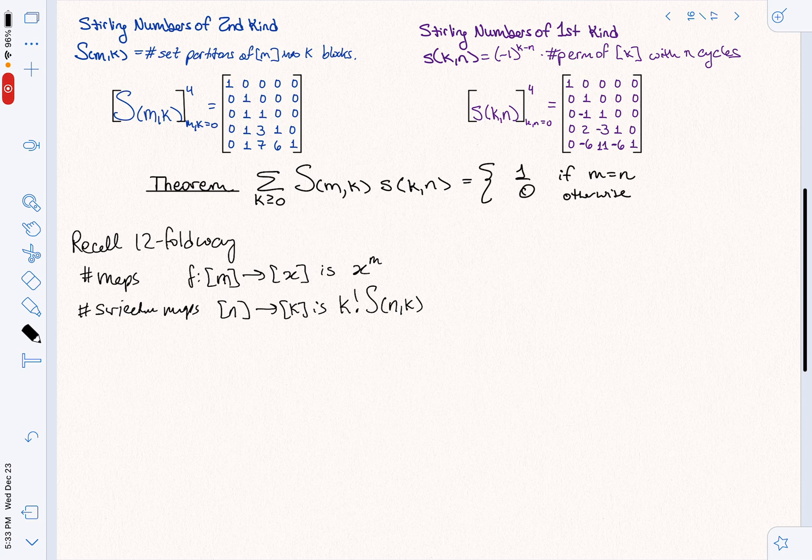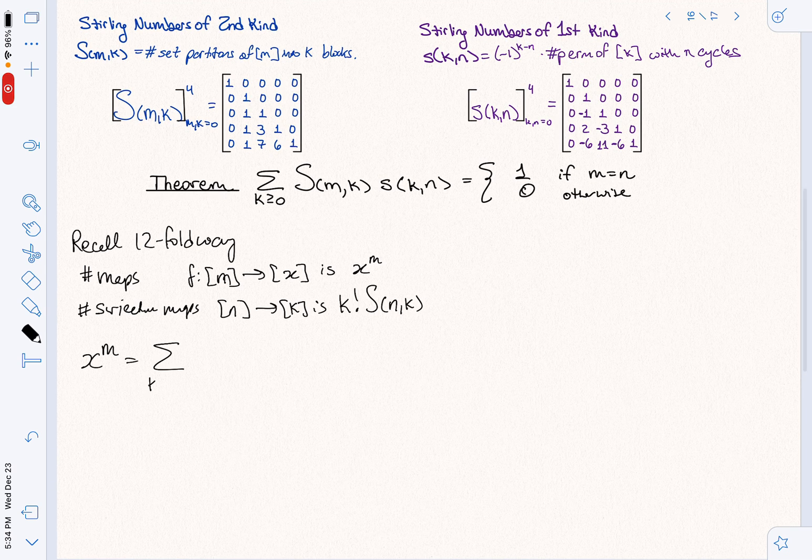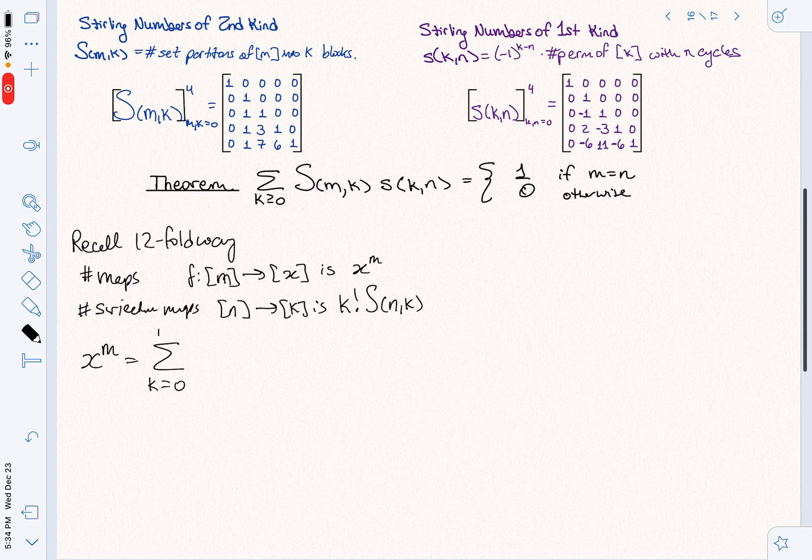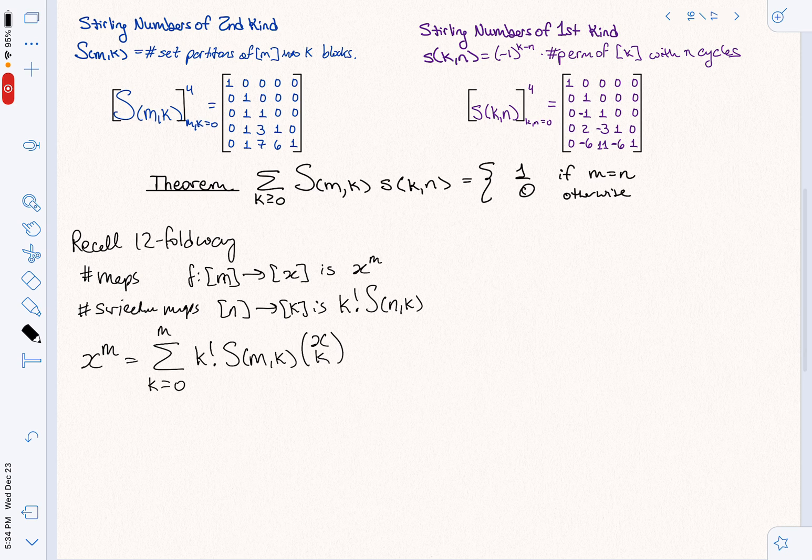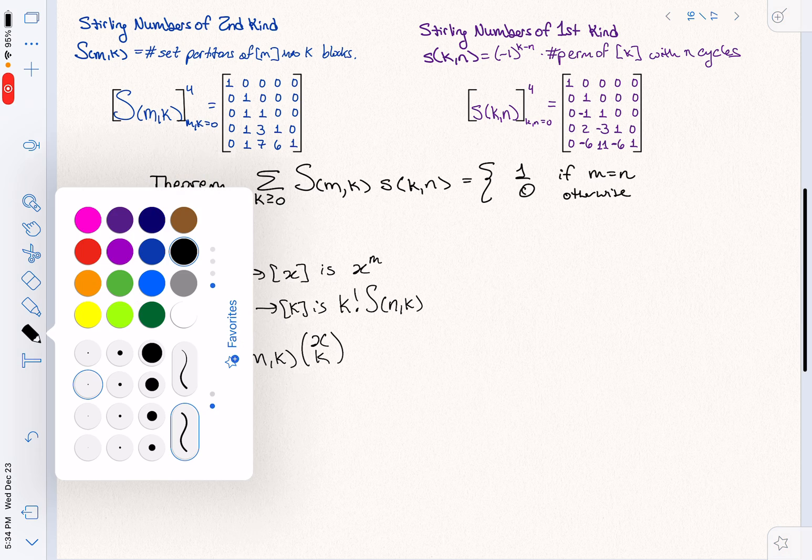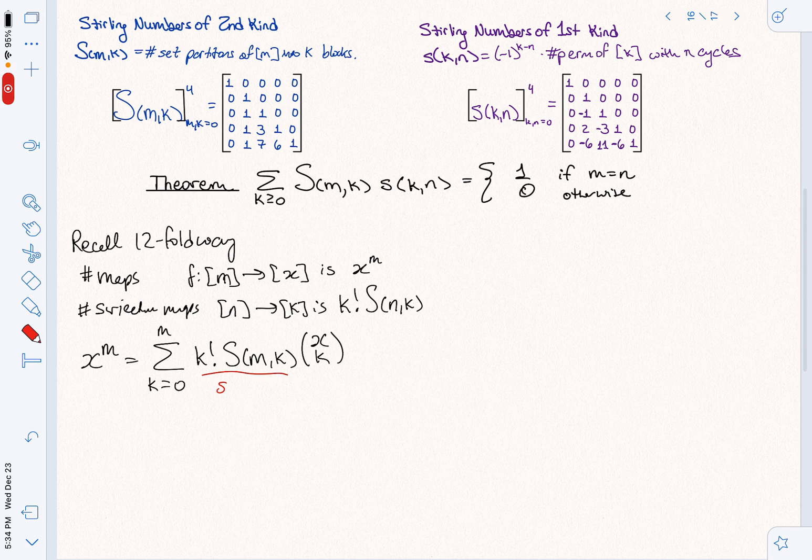So what does that tell us? Well, remember that all maps are surjective onto their image, right? So what does that mean? That means that I can actually write X to the M, this is counting all maps, this is equal to the sum over how big is my range of K factorial S(M,K). This is just telling me that I hit K things exactly. And then of course I need to choose, among the X things that I have to hit, choose K of them to hit. So this is counting surjective maps onto K boxes.